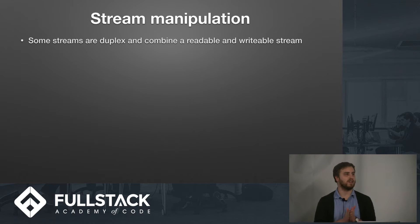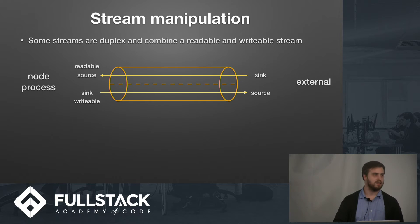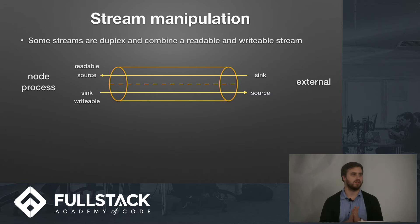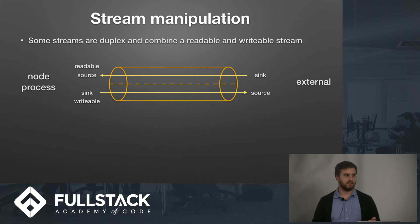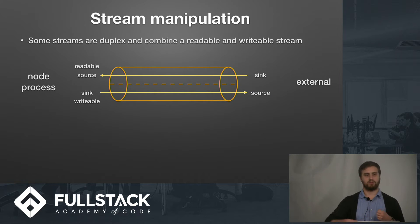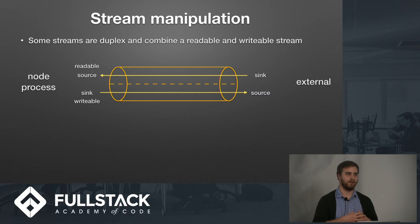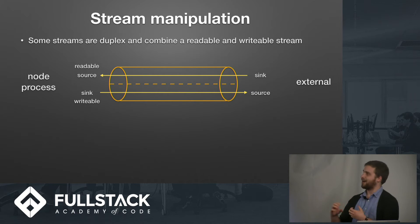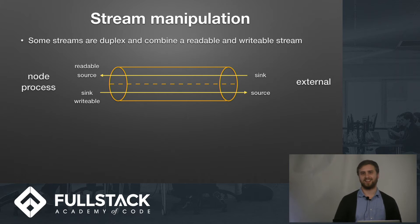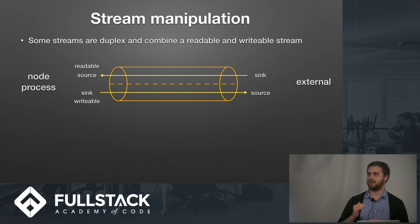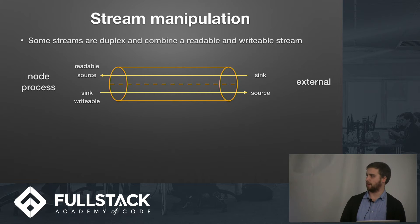Let's talk about duplex streams a little bit more. This graphic will kind of explain it. Say we've got our Node process running — we can both write to an external source and then read from it. That dotted line in the middle represents that those two processes are entirely separate. The readable stream knows nothing about the writable stream running parallel to it, but the client and the server may want to take advantage of that.